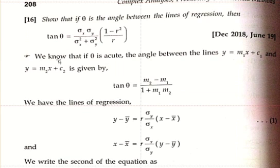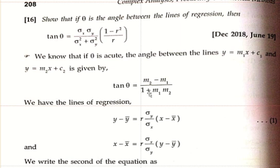Solution. We know that if theta is acute, the angle between the lines y equals m1x plus c1 and y equals m2x plus c2 is given by tan theta equals m2 minus m1 divided by 1 plus m1 into m2.